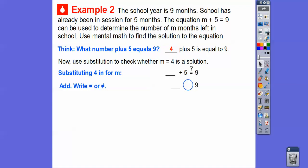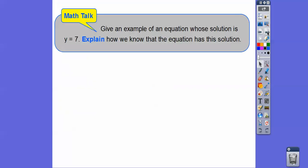So now we can go ahead and check by using the substitution. We can check to see if 4 is the solution. So 4 plus 5, does that equal 9? Yes, that sure does equal 9. So m equals 4 is the solution of the equation. And 4 months of school is remaining.